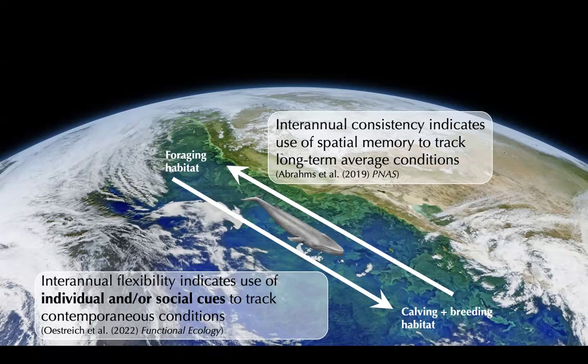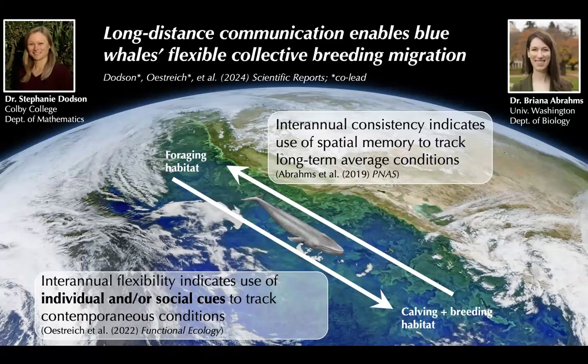What really stuck with me as we worked on this is that we kept talking about the use of individual and or social cues to assess contemporaneous ecosystem conditions. I really wanted to follow up on what information these animals are actually cueing off of to make this very impressive decision that tracks ecosystem phenology over an enormous potential foraging arena. This was the topic of a follow-up paper with Brianna and collaborator Stephanie Dodson, using a series of simulations connected with empirical observations to understand how blue whales eavesdrop on one another to make more accurate decisions of when to depart the foraging habitat.